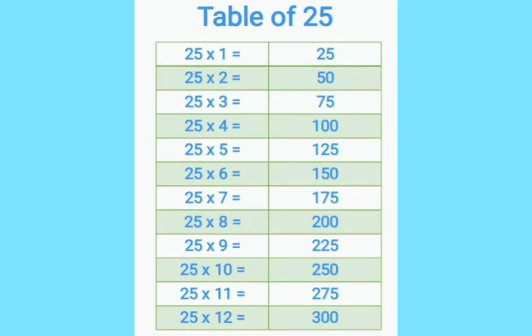25 ones are 25. 25 twos are 50. 25 threes are 75. 25 fours are 100. 25 fives are 125. 25 sixes are 150. 25 sevens are 175. 25 eights are 200. 25 nines are 225. 25 tens are 250. 25 elevens are 275.